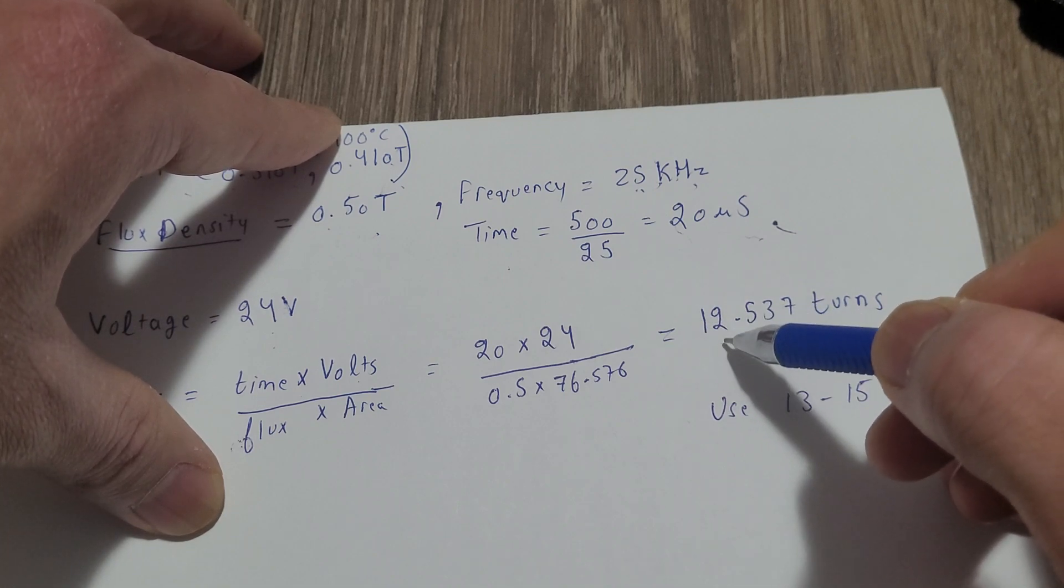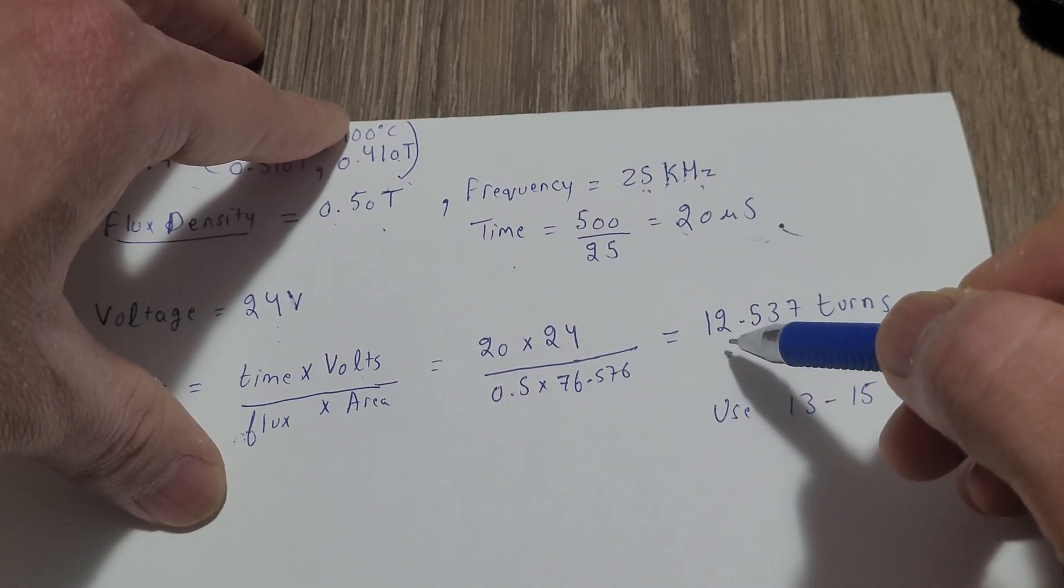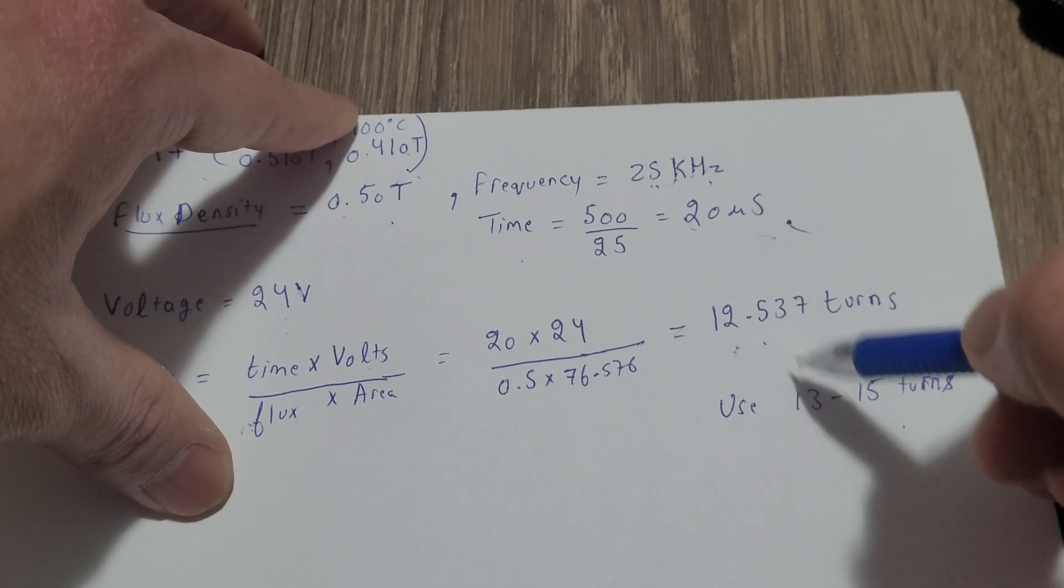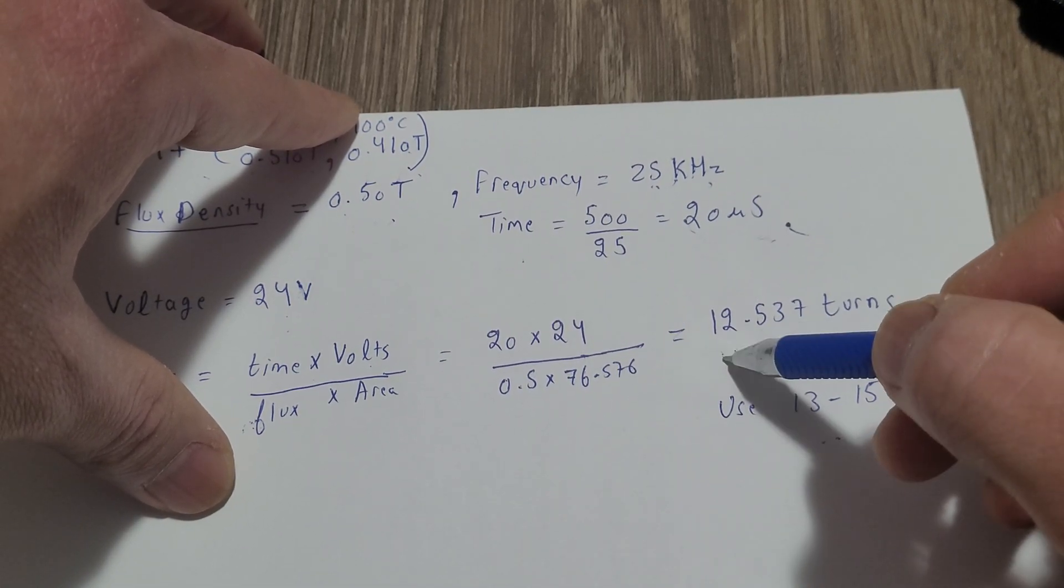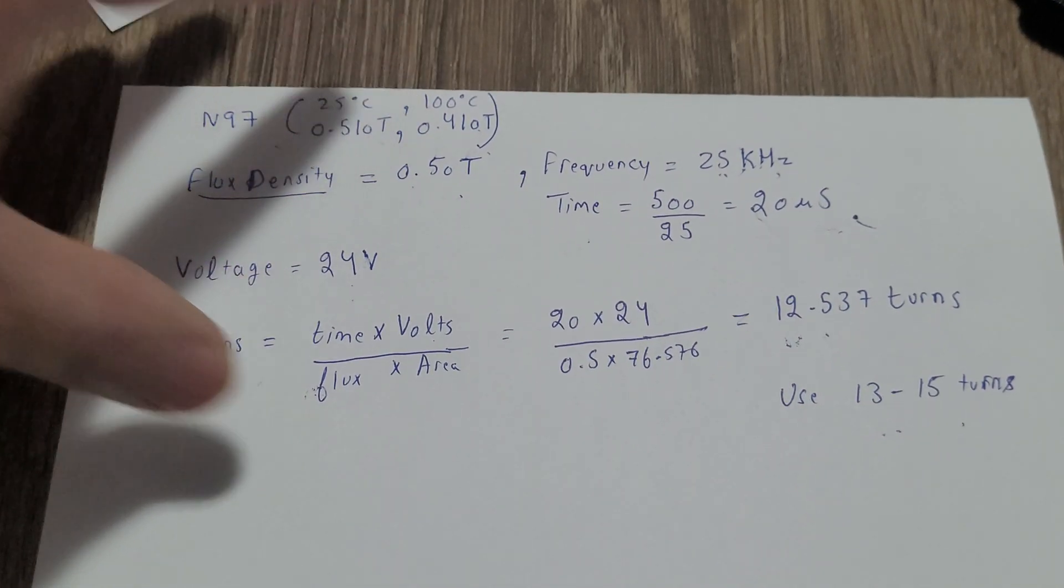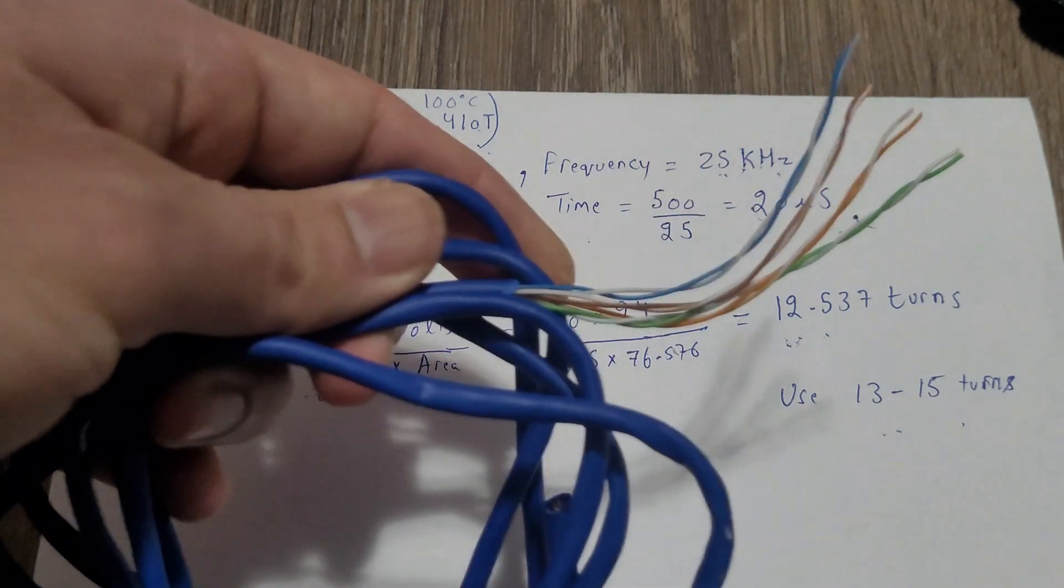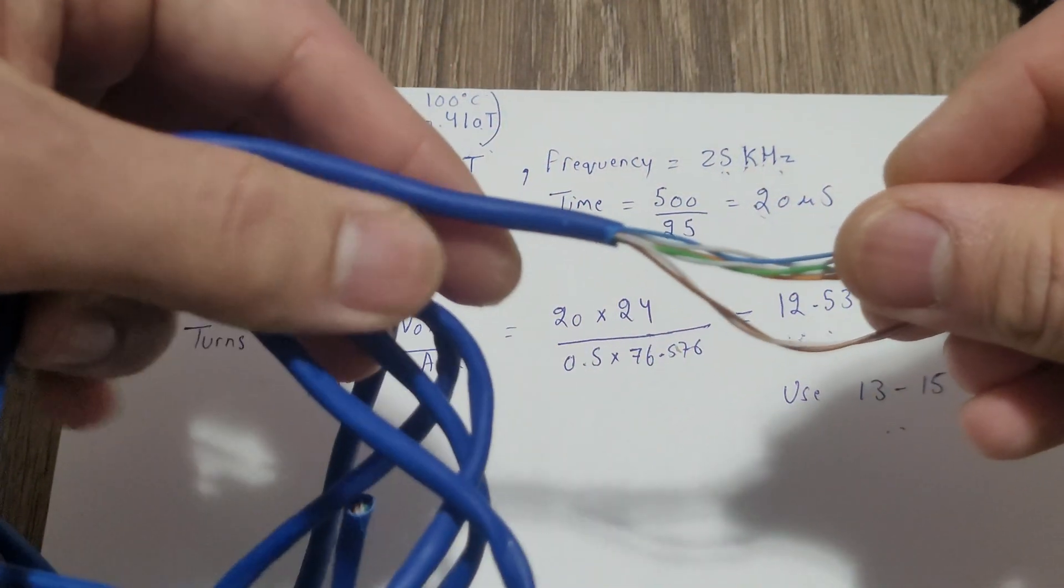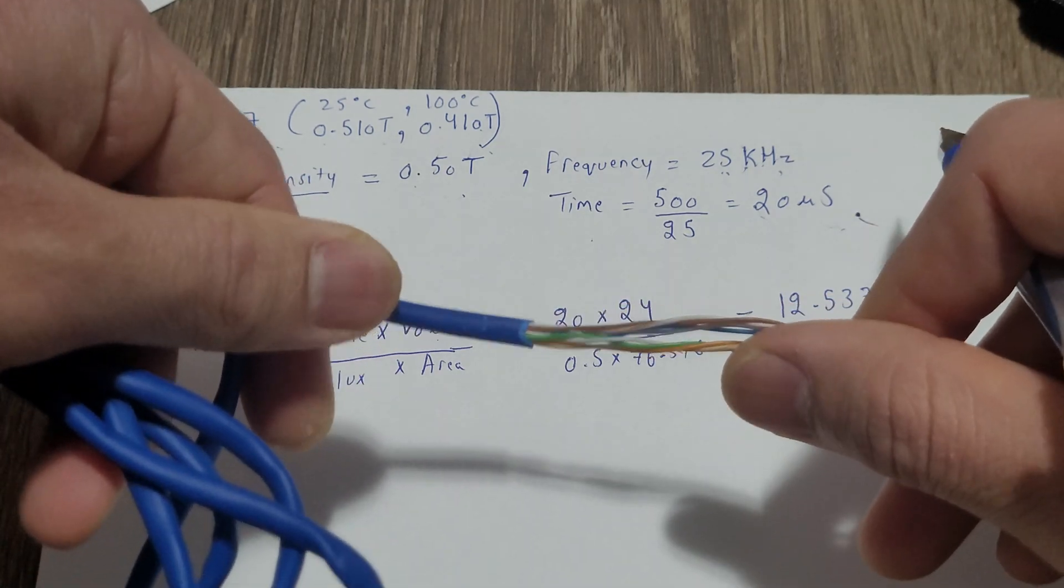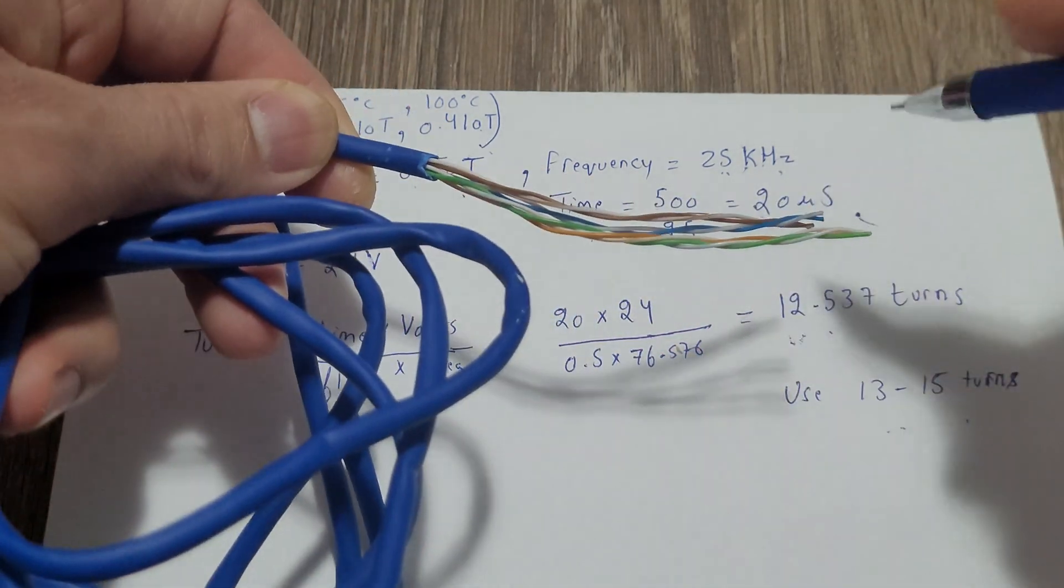Do not use less than this. You will run into problems if you do that. Higher turns is okay, less than this is not okay. So after that grab a Cat 5e cable. I'll be showing you how to do it for both a half bridge and full bridge.